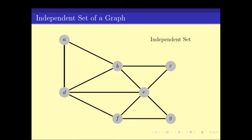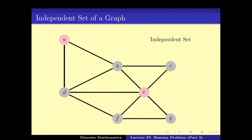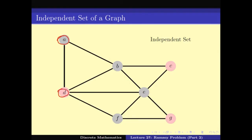For example, in the graph we have, {A, E} is an independent set — there is no edge between them. Similarly, {B, C, G} is also an independent set because there is no edge between B and C, C and G, and G and B.